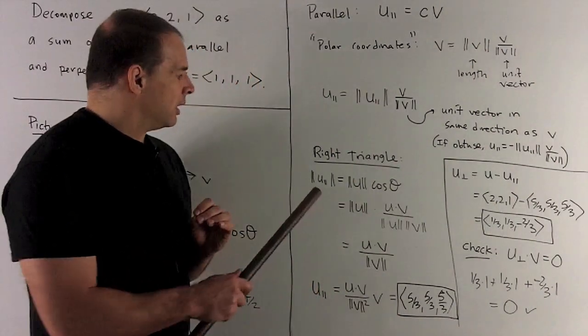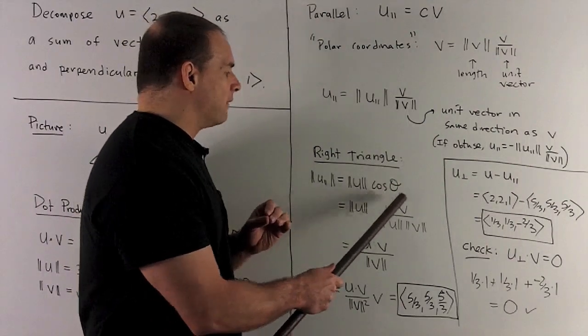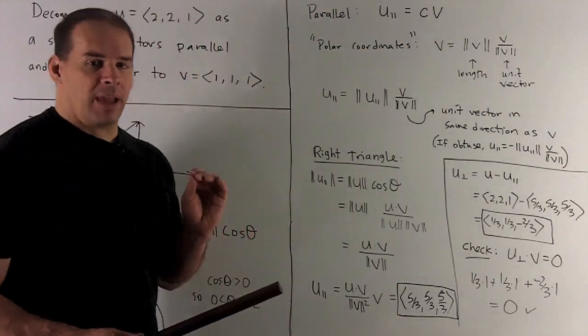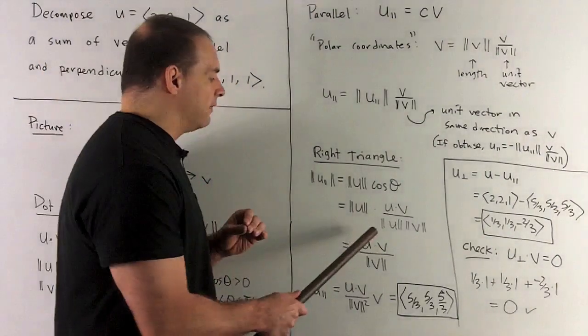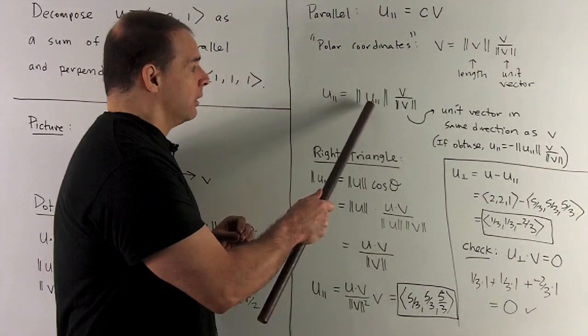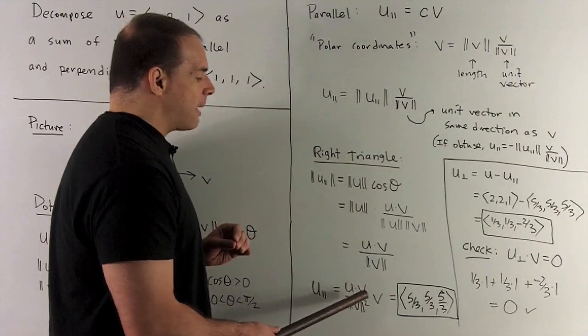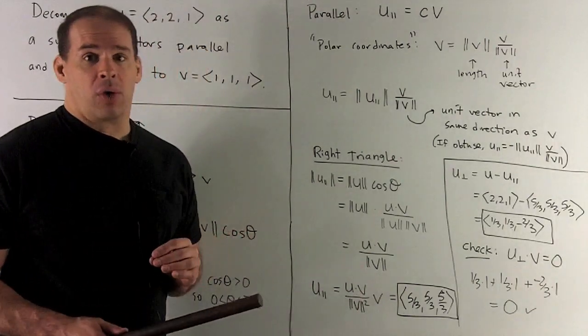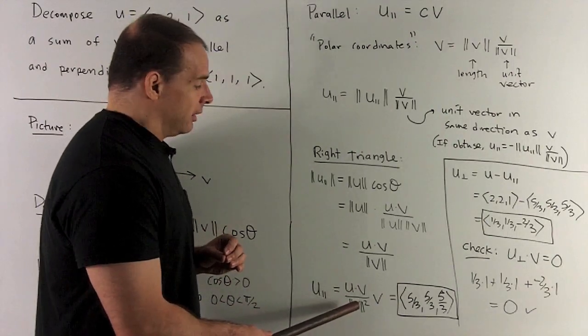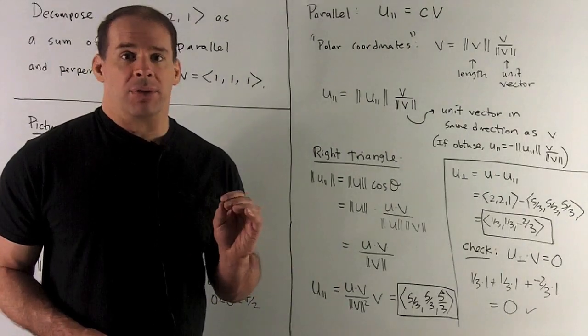So here's what we just did. I have the length of u parallel, it's the length of u times cosine theta, but cosine theta is u dot v over length u, length v. Now the length u's go away, so I'm left with the length of u parallel equals u dot v divided by the length of v. I'm going to take this and put it up here. I can collect the length of v's, so I'll have a length of v squared, u dot v on top, and then v out on the right. We calculated this term already: u dot v is 5, and length of v squared is 3. So we're going to have 5 thirds, 5 thirds, 5 thirds for u parallel.